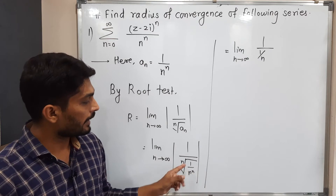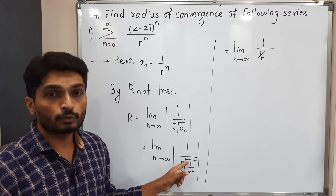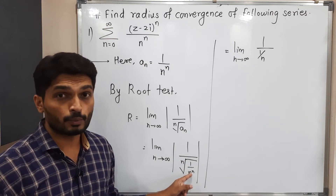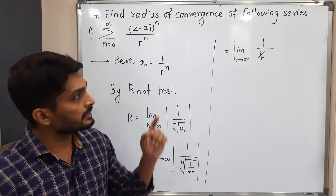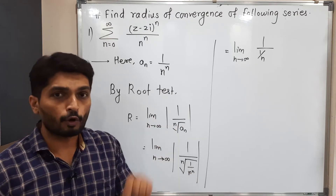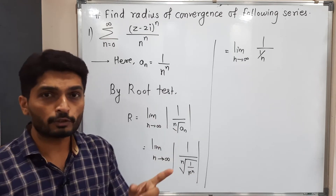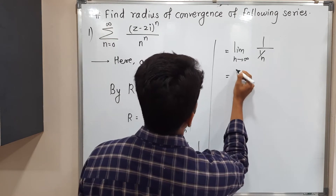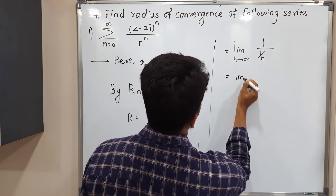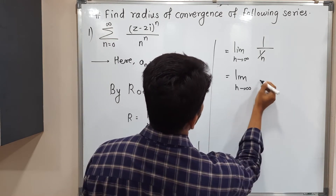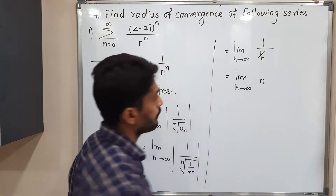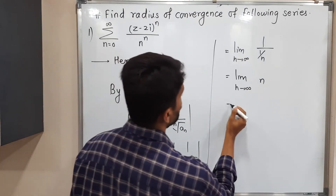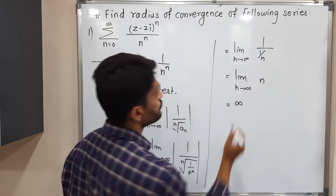Since n is in the denominator of a denominator, we can shift it to the numerator. So it becomes the limit as n tends to infinity of n. Applying the limit, n goes to infinity. Therefore the result goes to infinity.